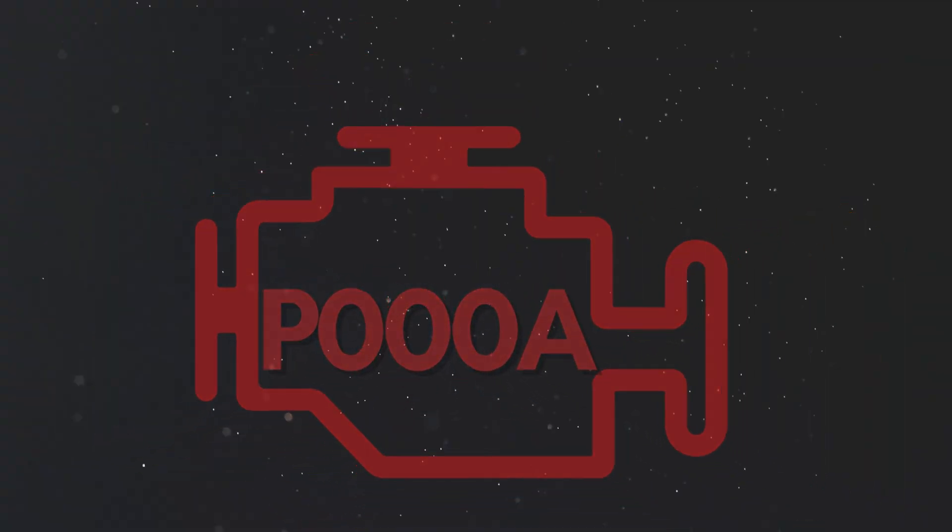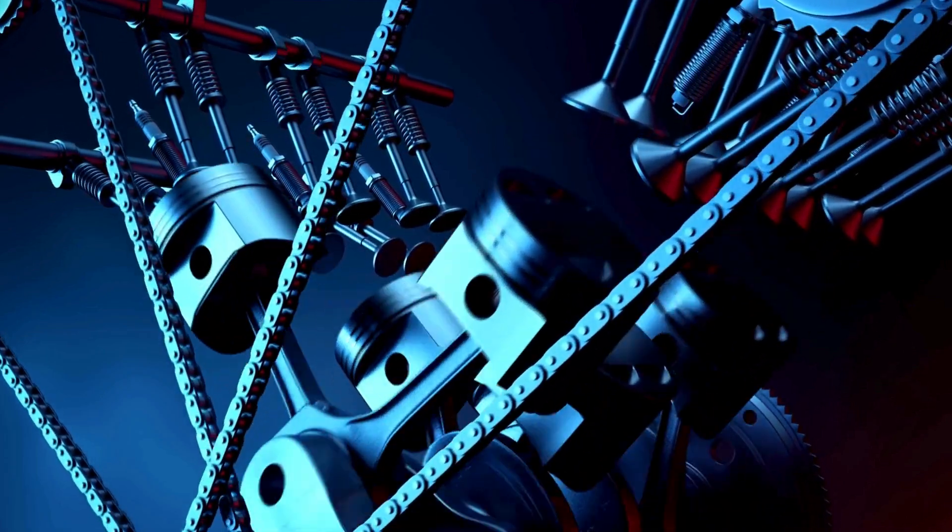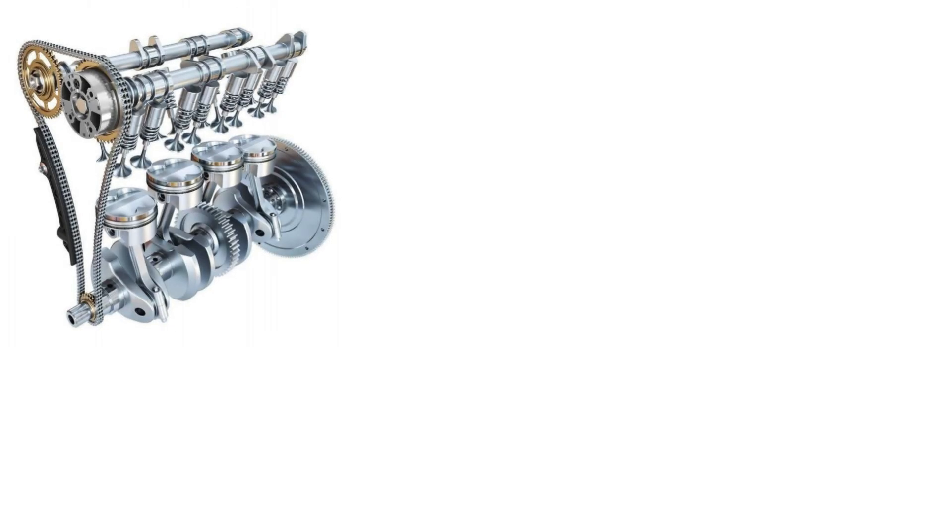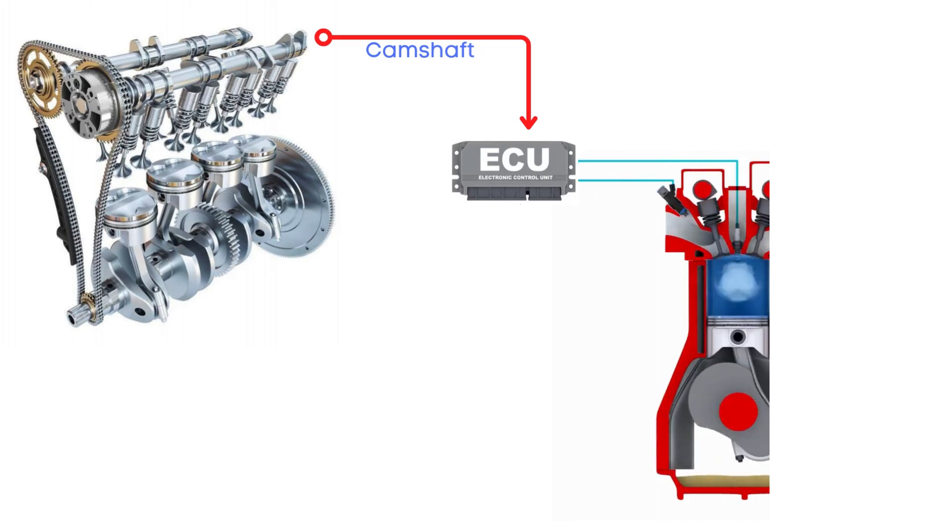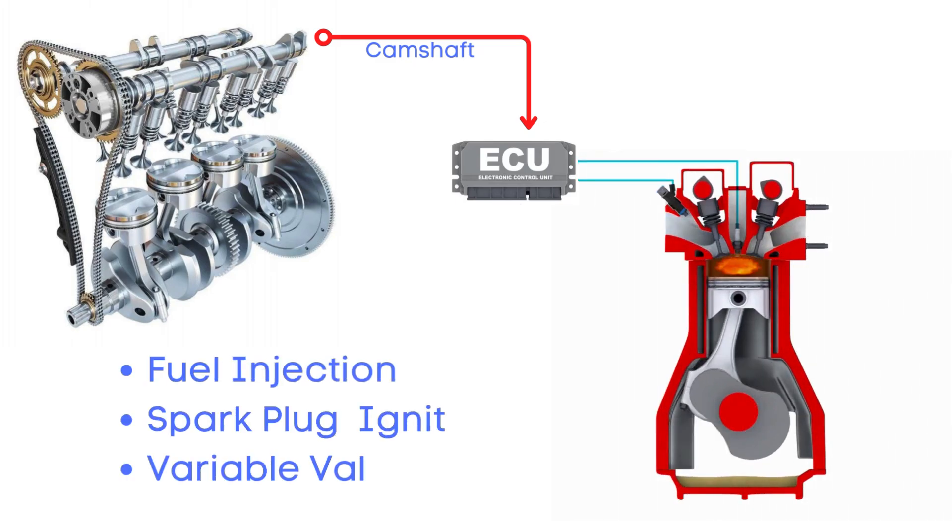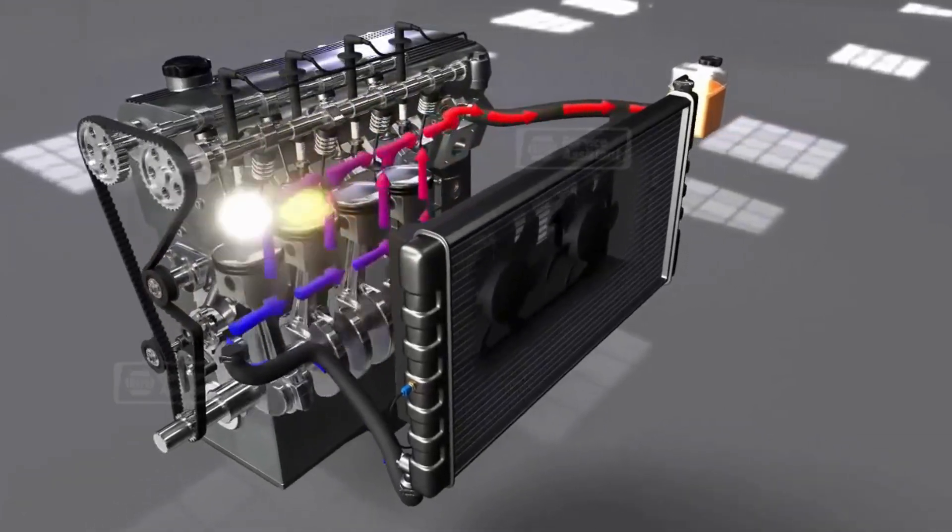Now, let's learn why P000A was triggered. Your vehicle's camshaft sensor has a critical job. It measures the camshaft's position and sends that data to the engine control unit (ECU). The ECU then uses this data to control essential timing functions like fuel injection, spark plug ignition, and variable valve timing, all of which are vital for efficient engine performance.